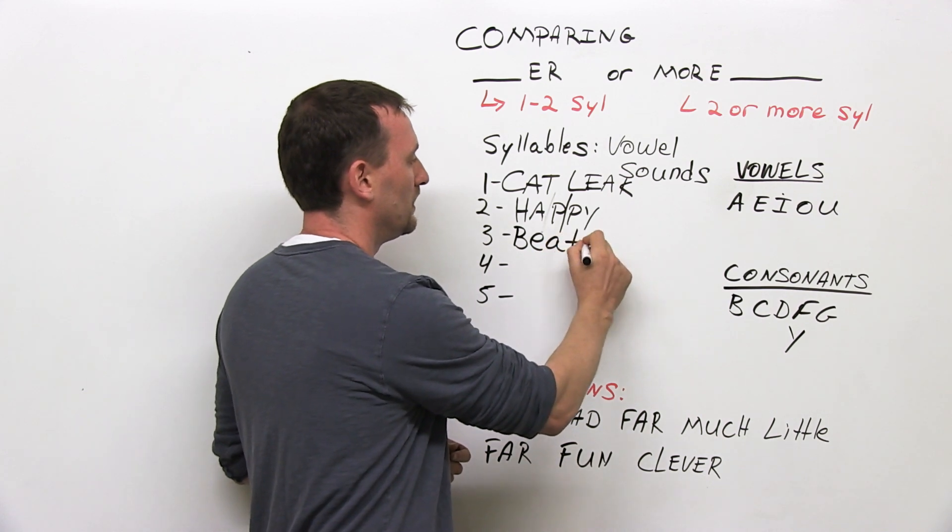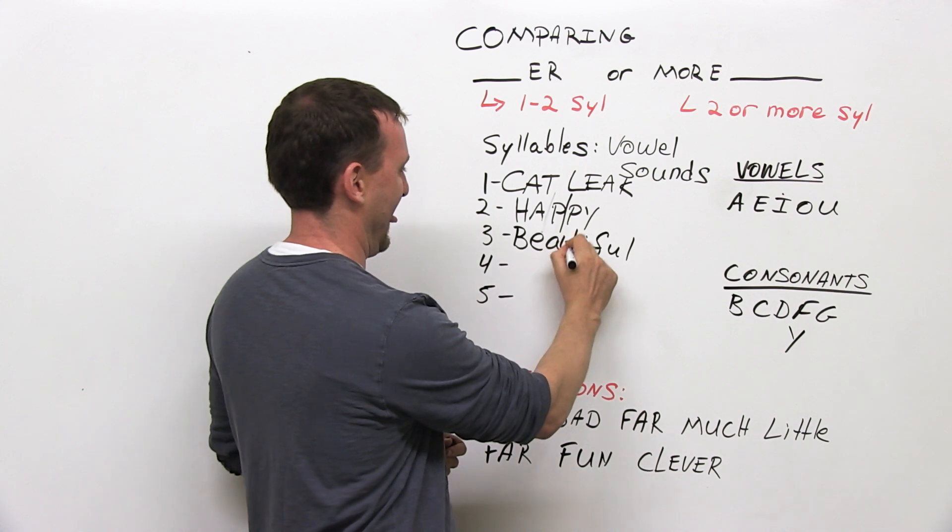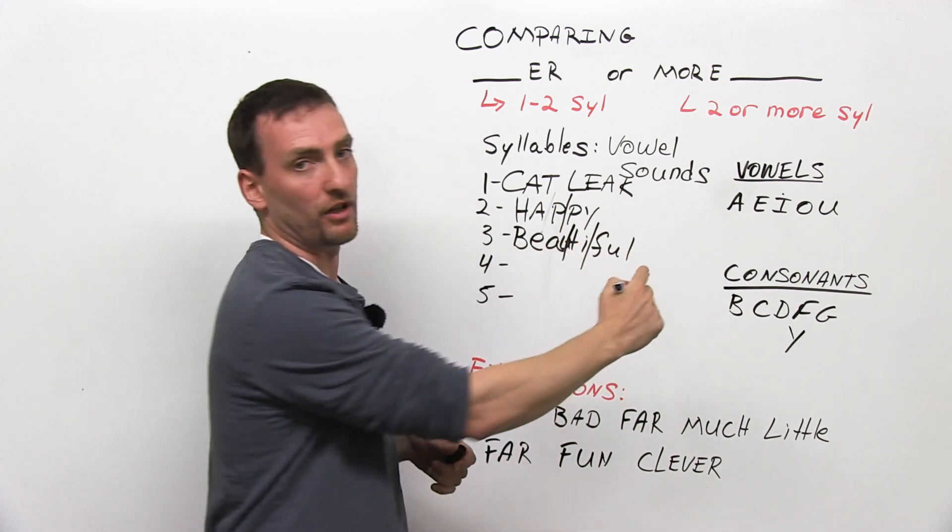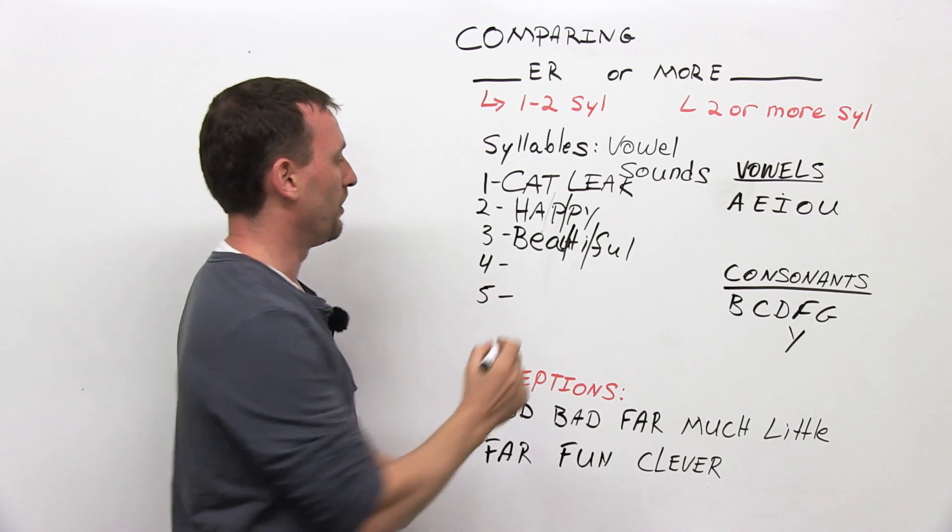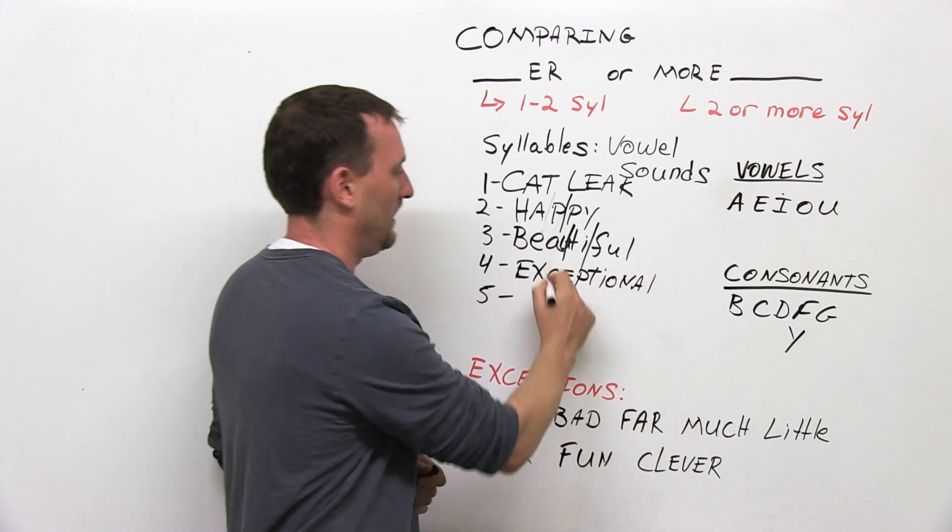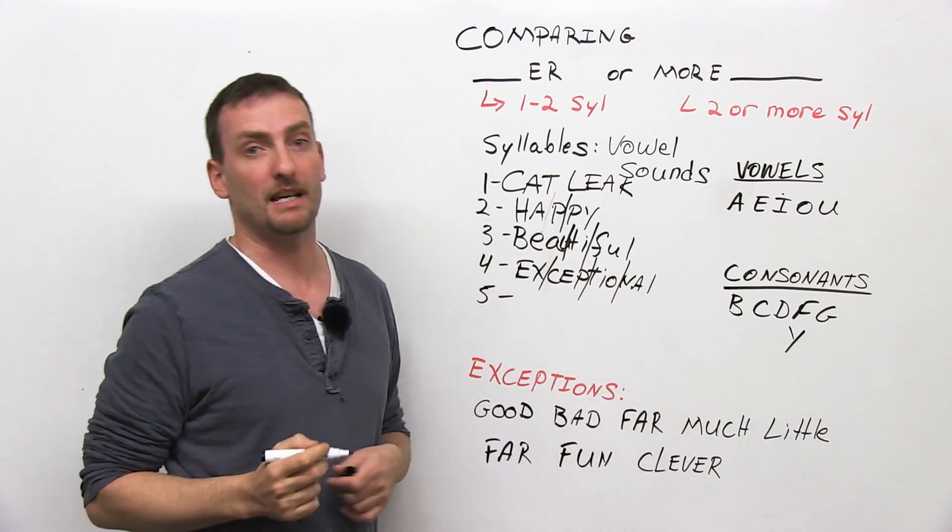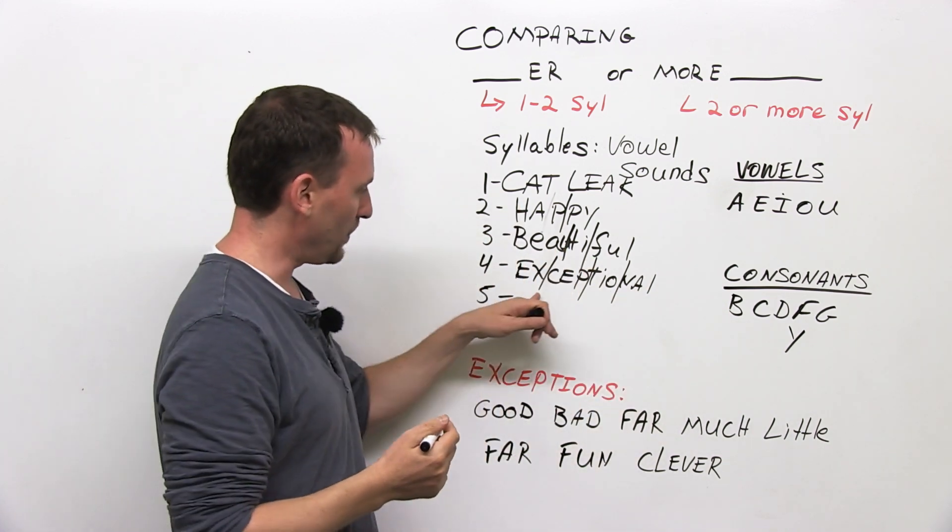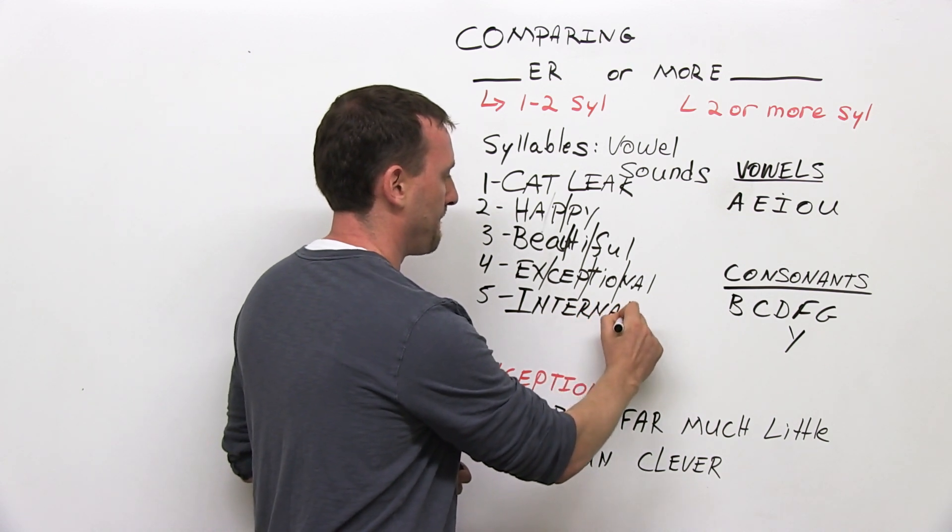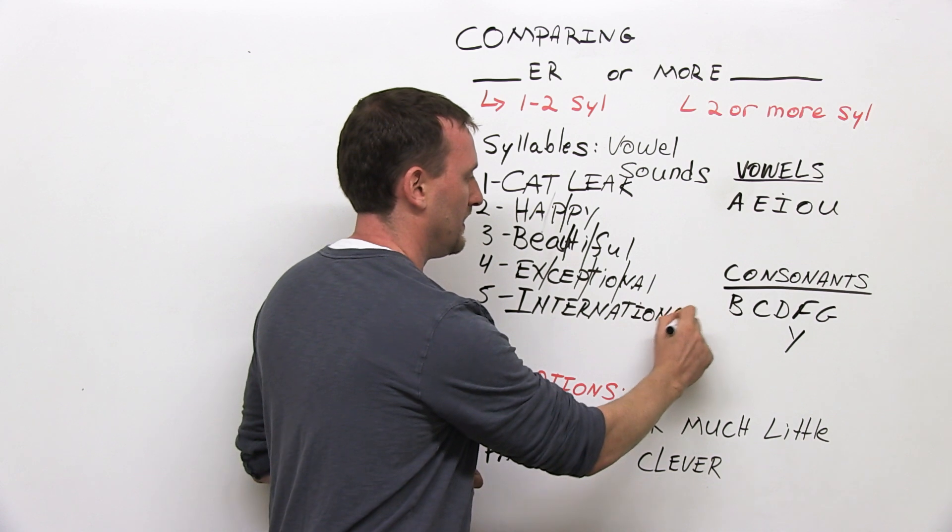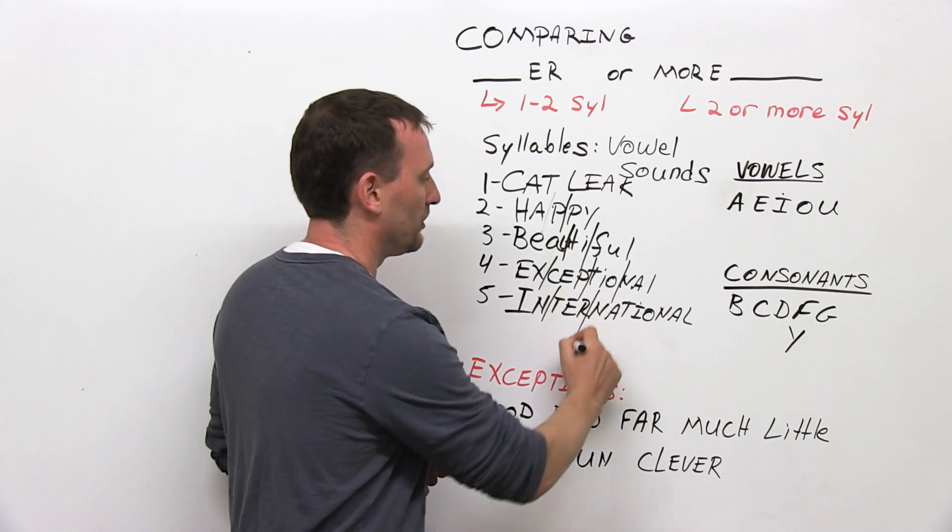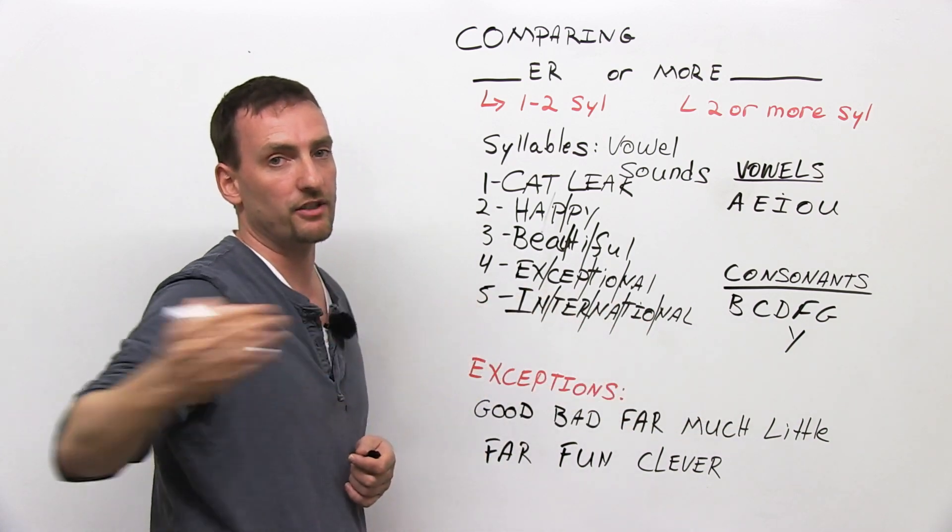Beautiful. Three syllables. How about four? Exceptional. Ex-cep-tional. Great. Very good. One more. Five. Very common word. International. Can you divide them up into the syllables? Try it. In-ter-na-tional. International. Five syllables.